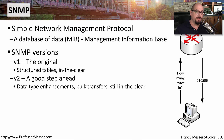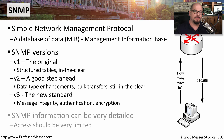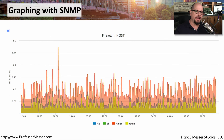SNMP version 2 added a number of enhancements — the management station could request many different items at one time and receive a bulk response in return. But like version 1, there was no encryption associated with SNMP version 2. SNMP version 3 added the security we were waiting for, providing message integrity, authentication, and encryption of requests and responses. You'll want to be sure that only those who need access are querying these devices through SNMP. Once you've queried a device over time, you can create reports showing uptime, response time, the amount of traffic transferred, or anything else collected by that SNMP agent.